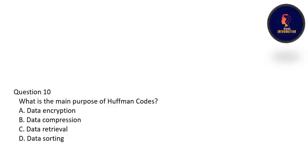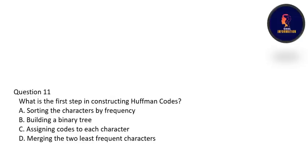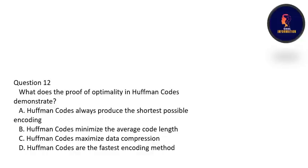What is the main purpose of Huffman coding? The main purpose is data compression — option B is correct. What is the first step in constructing Huffman codes? The first step is sorting the characters by frequency. What does the proof of optimality in Huffman coding demonstrate? It demonstrates that Huffman coding minimizes the average code length — option B is correct.